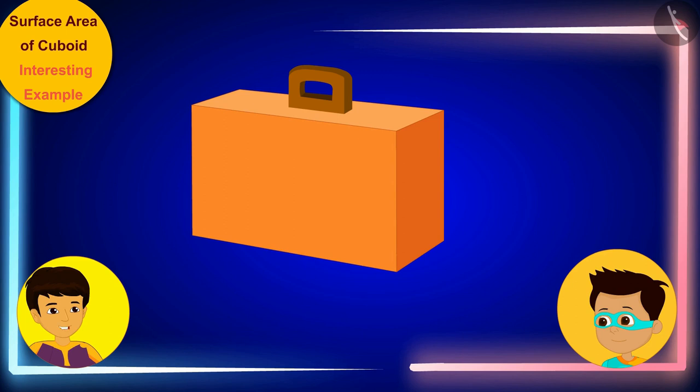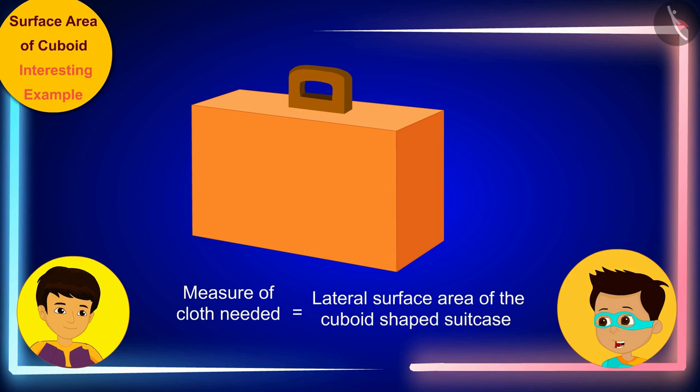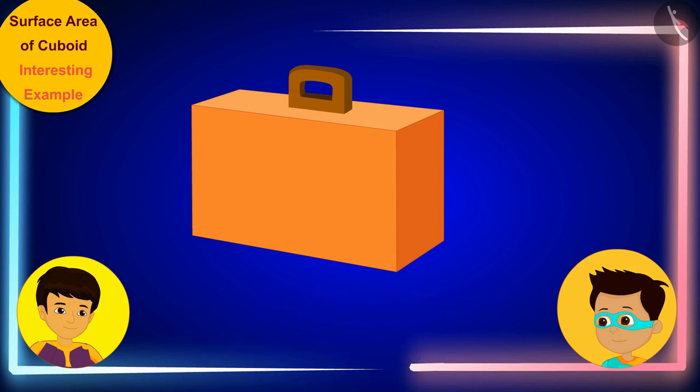Tell me, what part of the suitcase do these vertical surfaces form? Oh yes, this is the lateral surface of this cuboid shaped suitcase. Perfect. This means that the amount of fabric we need to cover these surfaces will be equal to the lateral surface area of this cuboid suitcase. So now can you find the answer to how much cloth will be required to cover the suitcase?